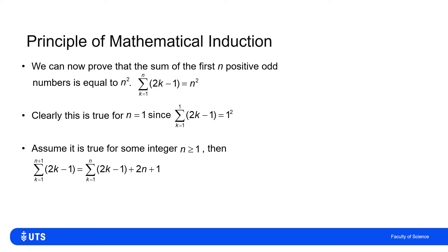Now we assume it's true for some integer n ≥ 1. If we want to add the sum of the first n+1 positive odd numbers, we're adding the terms 2k - 1 from k = 1 to n+1. That equals the sum of the first n terms plus the next odd number. And the next odd number would be 2n + 1, since we previously stopped at 2n - 1.